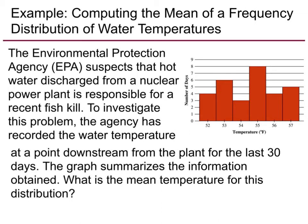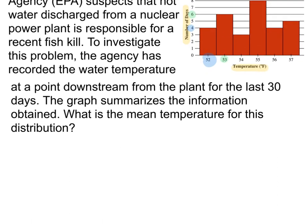In this next example, we'll look at how we find the mean when we have a histogram. So how can I use this histogram to find the mean? We have the temperature going across the x-axis and the number of days going up the vertical axis — that's the frequency for each of those temperatures. So it was 52 degrees for 4 days, or 53 degrees for 6 days, or 54 degrees for 3 days. So x-bar is equal to 52 degrees times 4 days plus 53 degrees times 6 days, and we keep going.